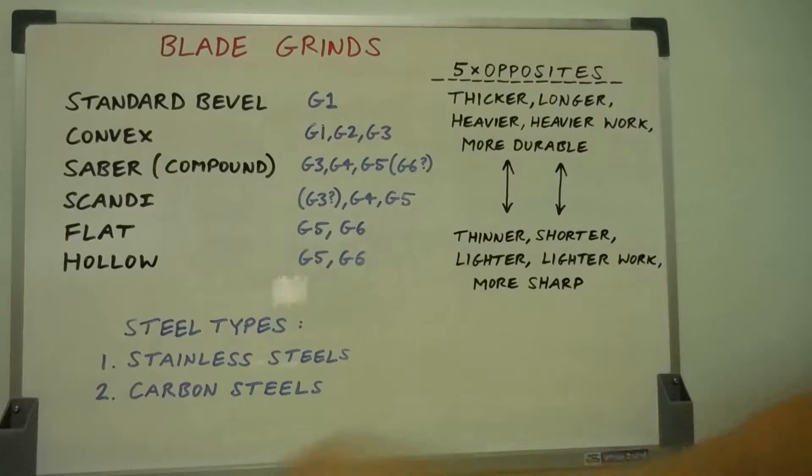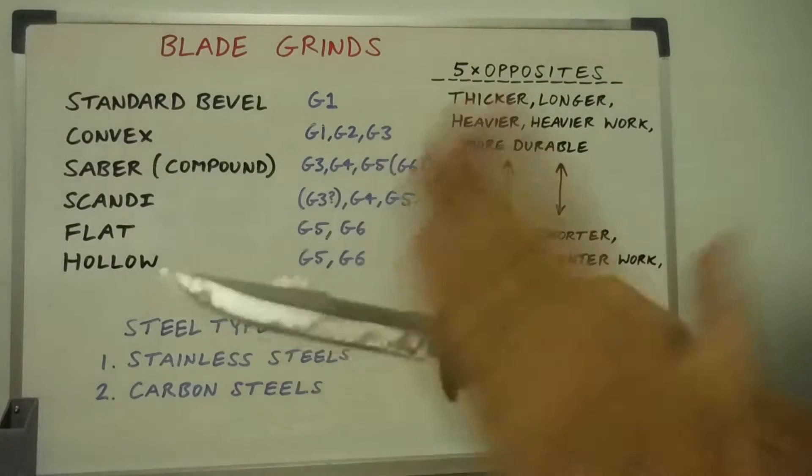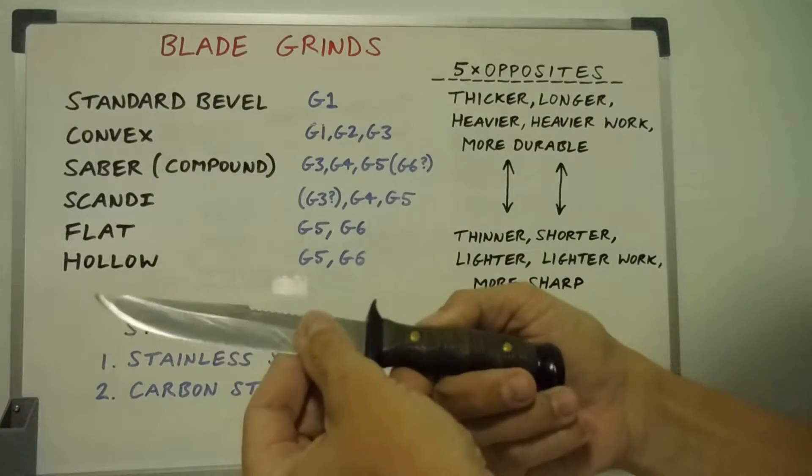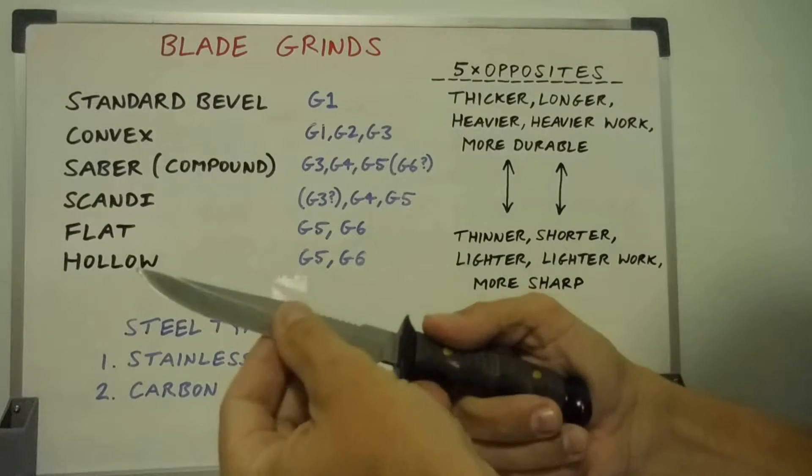And for the hollow grind, another example of where the real knife doesn't fit and examples don't fit my advice because my smaller working knife, which I've talked about in previous videos, a four and a quarter inch blade, that's actually a hollow grind.